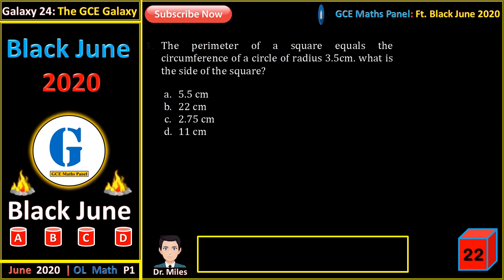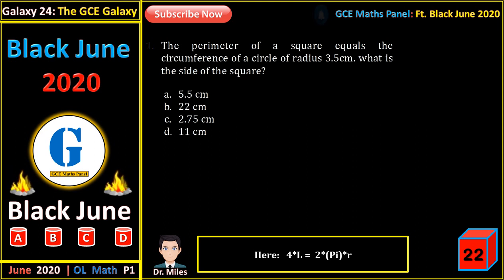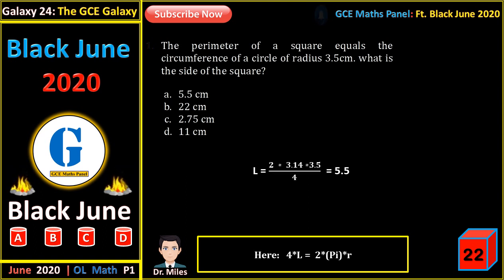The perimeter of a square equals the circumference of a circle of radius 3.5 centimeters. What is the side of the square? If one side of the square is L, then the perimeter is 4L, which equals the circumference of a circle: 2 pi r. So L equals 2 pi r divided by 4, which is 5.5.